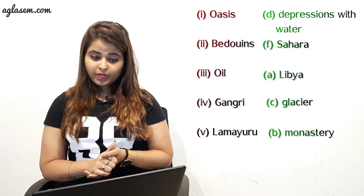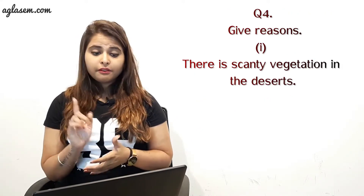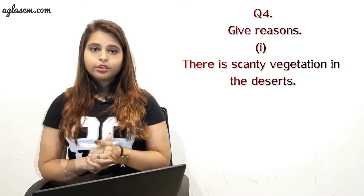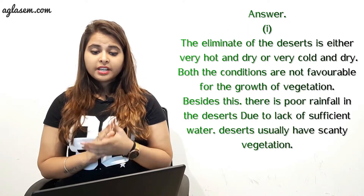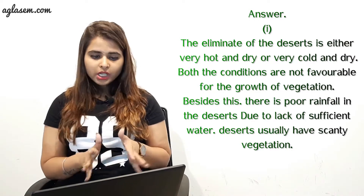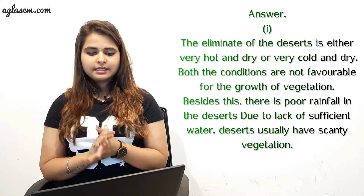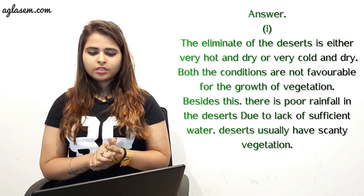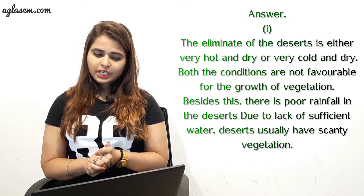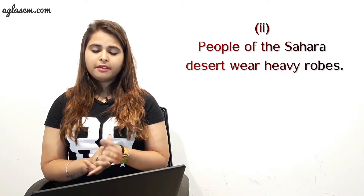The fourth question is: give reasons. Part 1 — why is there scanty vegetation in the desert? The answer is: the climate of a desert is either very hot and dry or very cold and dry. Both conditions are not favorable for the growth of vegetation. Besides this, there is poor rainfall in the desert due to lack of sufficient water, so deserts usually have scanty vegetation.